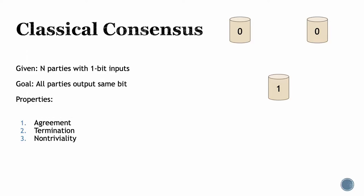In the classical consensus problem, we're given n parties all with one-bit inputs, and our goal is to design a protocol that satisfies three properties. The first is agreement, which means all parties output the same bit. The second is termination, meaning the protocol must terminate within a finite number of steps. The third is non-triviality or validity, which says that if all honest parties have the same input, they must output that bit — so if they all have input 0 they output 0, and if they all have input 1 they must output 1.